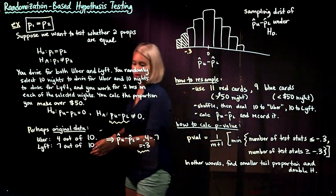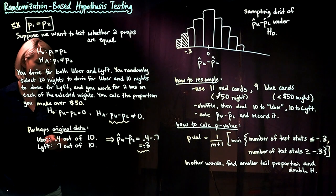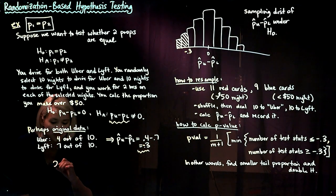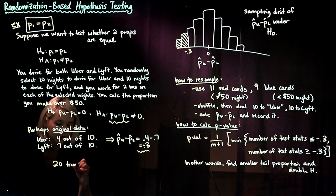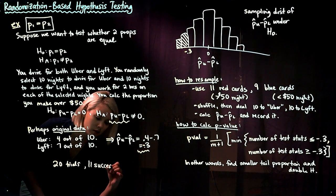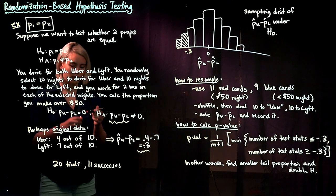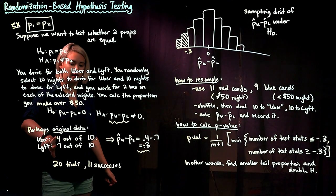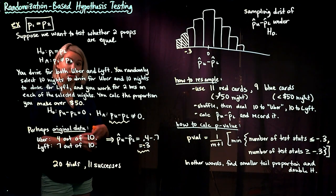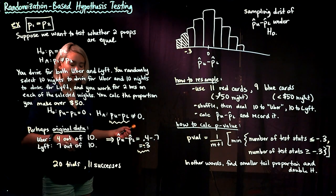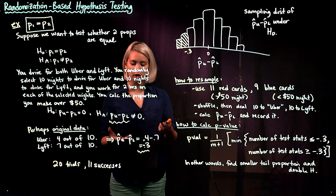Looking at the original data again: we have 4 out of 10 successes for Uber and 7 out of 10 successes for Lyft. That means we have 20 trials total and 11 successes. If there really was no difference between Uber and Lyft, then those 11 successes could have been distributed in some other way.